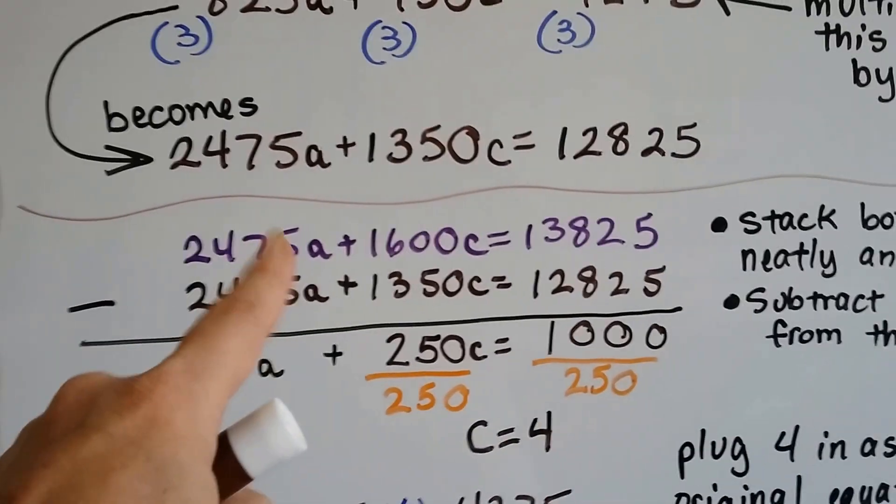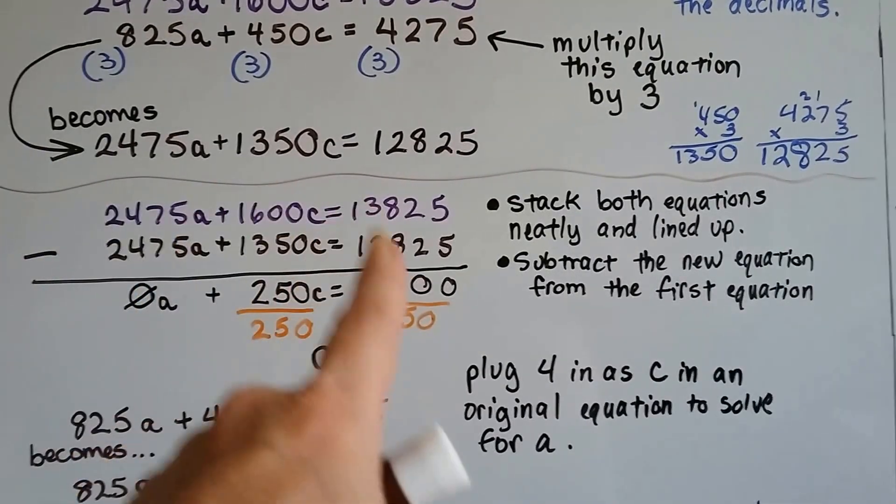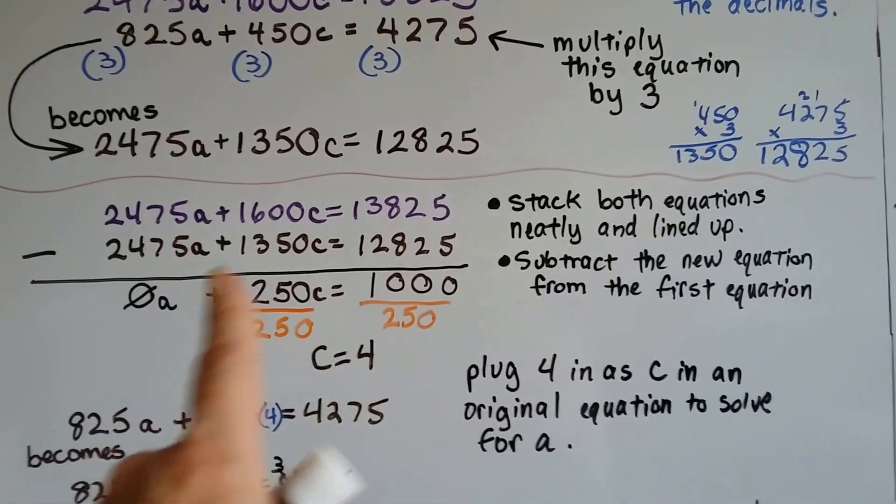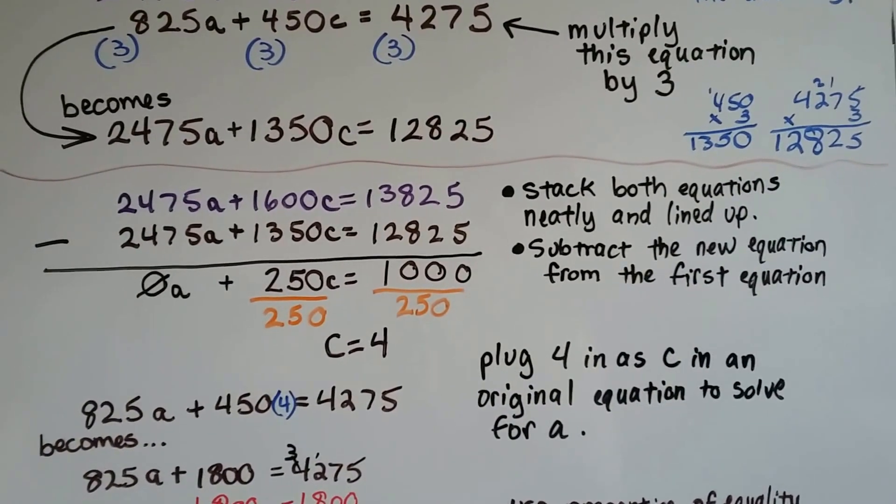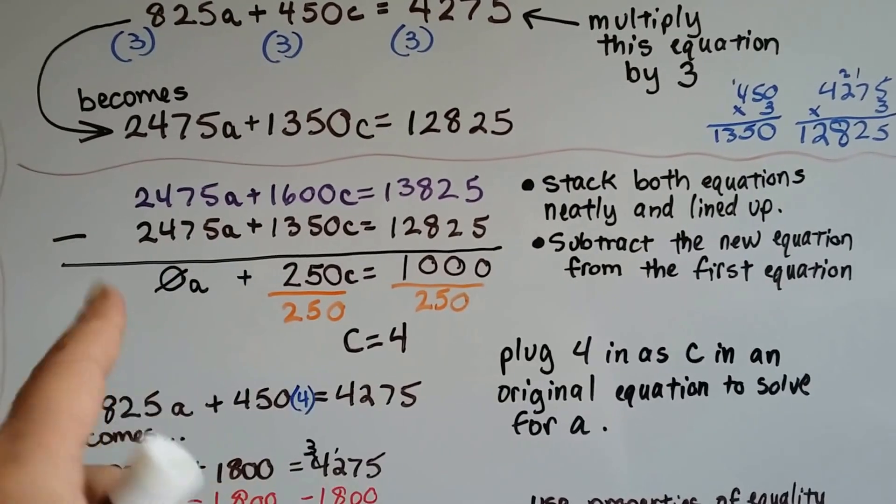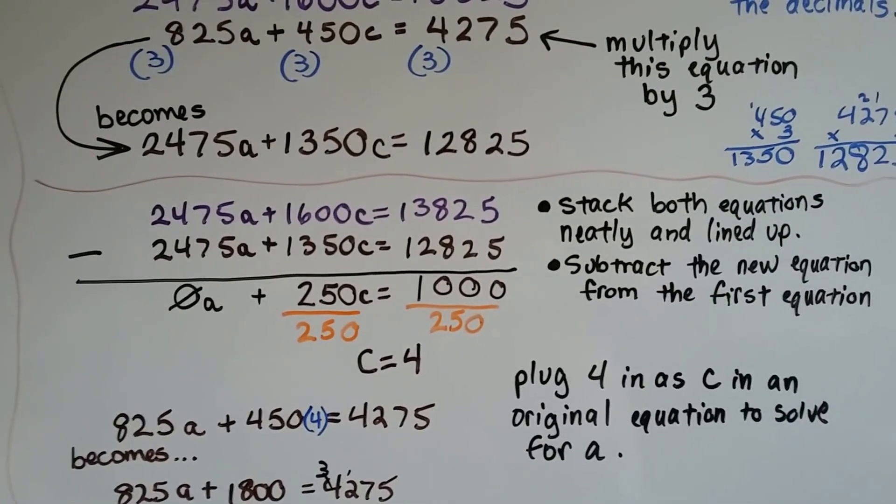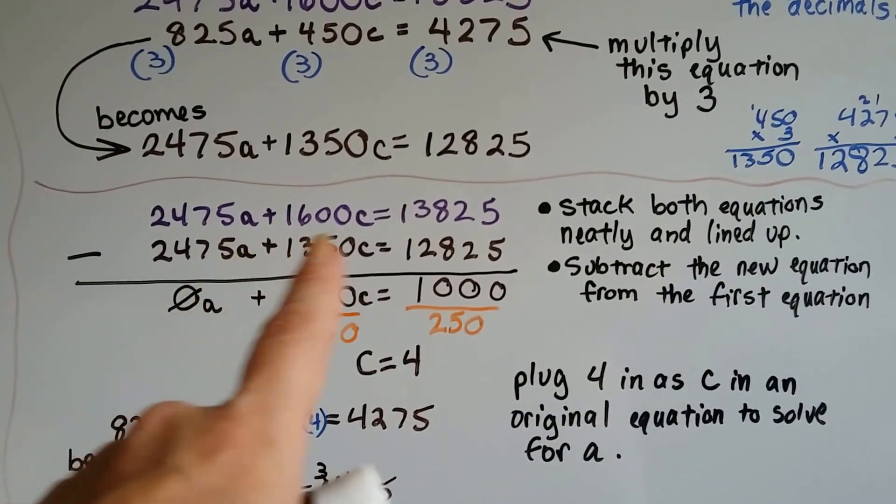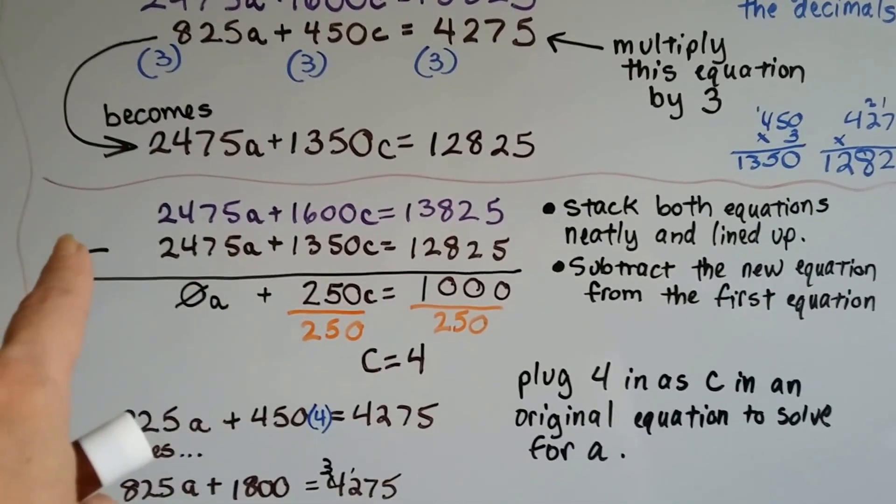Now these are my new equations, and I stack both equations neatly and line up the variable terms and the equal sign and the totals. We subtract the new equation from the first equation. Remember, when you're subtracting integers, you add the opposite. But in this case, we don't have to worry about it because there's no negative signs, so we're just going to subtract.